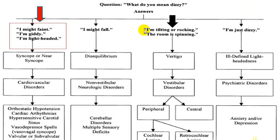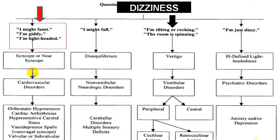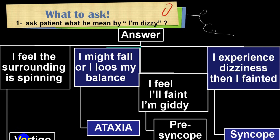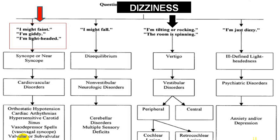If a person says 'I am going to faint,' 'I'm giddy,' or 'I'm having light-headedness,' think in terms of syncope or near-syncope, very commonly due to orthostatic hypotension, cardiac arrhythmias, hypersensitive carotid sinus, vasovagal syncope, or structural heart disease. If a person says 'I am about to fall while walking or in a particular posture,' it is more in favor of disequilibrium or ataxia — which can be cerebellar, sensory, or vestibular.